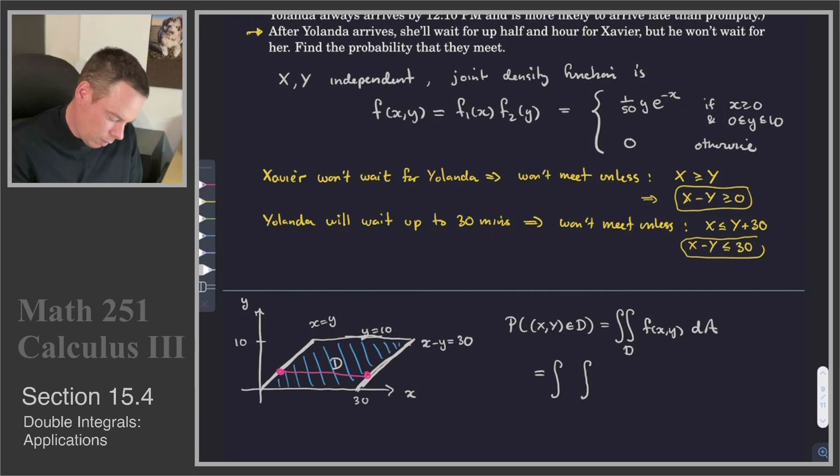We're going to integrate with respect to X first. X is going to go from Y, so we're looking at expressing everything in terms of Y. X is going to go from Y to 30 plus Y. And then Y is going to go from 0 to 10. And the function we're integrating is F of X, Y, so that's 1 over 50 Y e to the negative X. That's our first variable in our integration, dX and then dY.